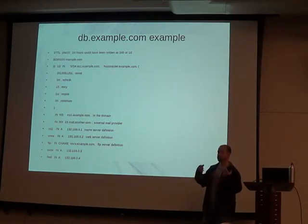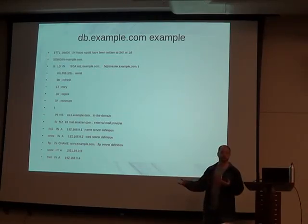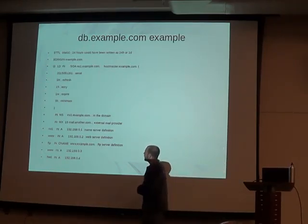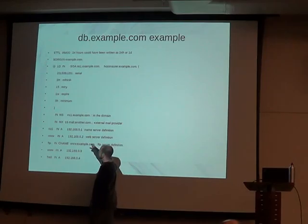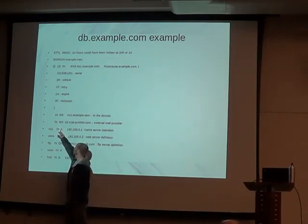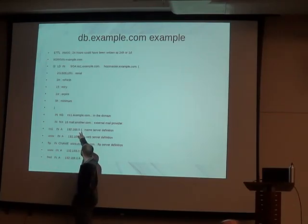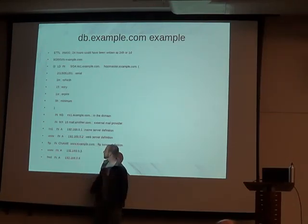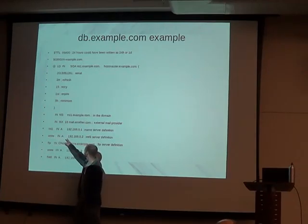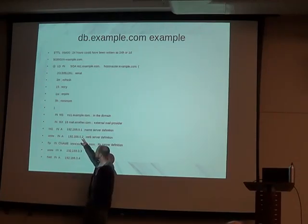You can set that up with 10 and the other server up with a 12. Then we have some A records. A records are fairly simple. You can do your hostname, it's an A record so we put an A there, and then we put the IP address. We can do that again down here for www, and we have our IP address.